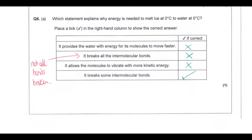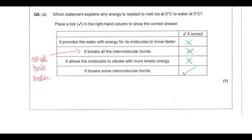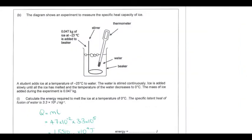Moving to the longer answer section: why is energy needed to melt ice at zero degrees to water at zero degrees? During a phase change, the potential energy is changing, meaning bonds are being stretched or broken. Going from ice to water, some intermolecular bonds between water molecules are broken — not all, as that would produce a gas — but enough to allow the molecules to move freely past each other.